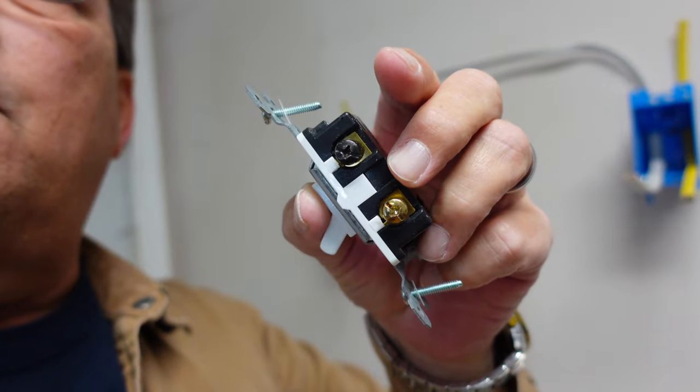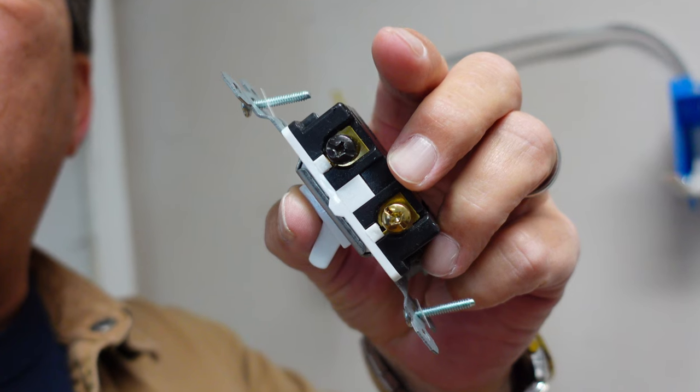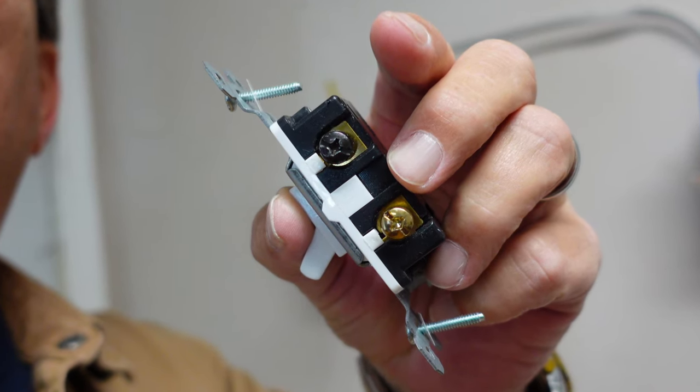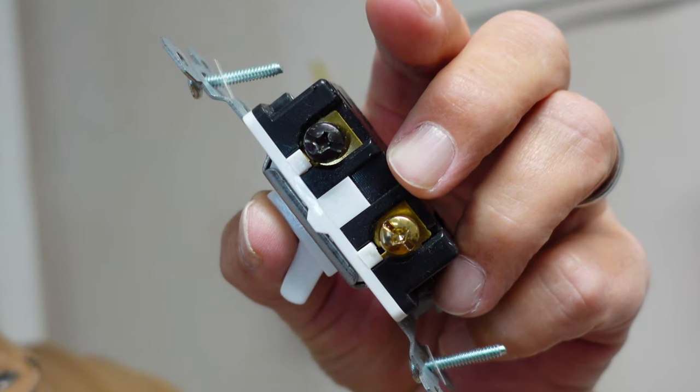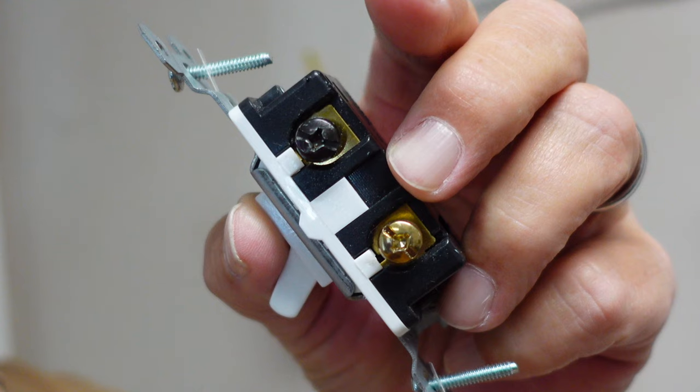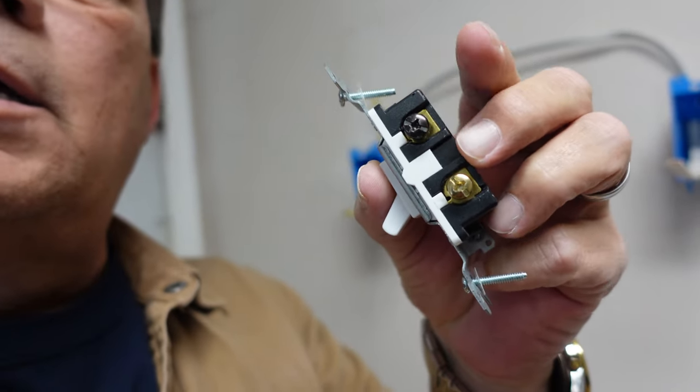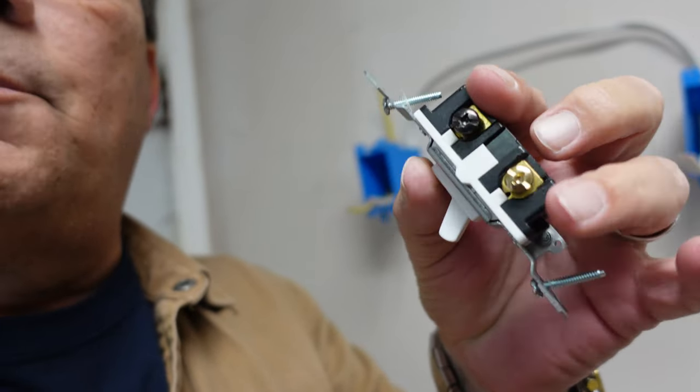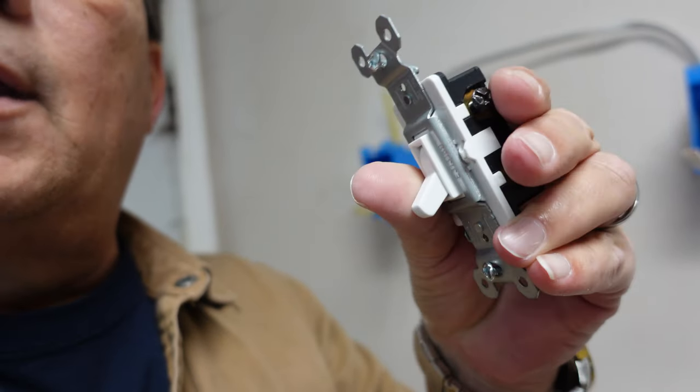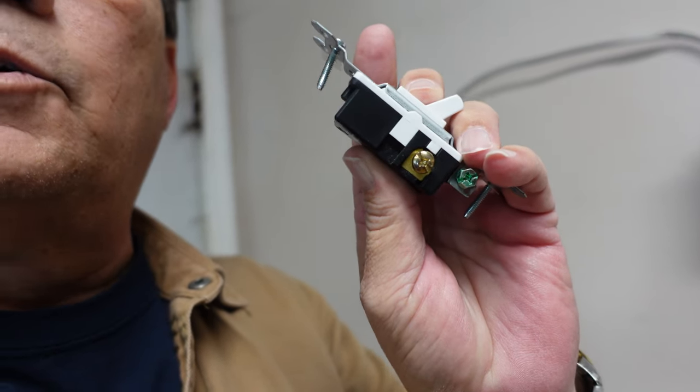Now I'm going to pull a switch here for you. This is the switch. You can see on this switch, this black terminal up here, that's going to be your common leg. That's what your power is going to go on. Power going to the light or power coming from the breaker, whatever the power source is, that's going to go to your common on the switch. The brass screw here at the bottom, and then also the brass screw on the other side, those are your travelers.